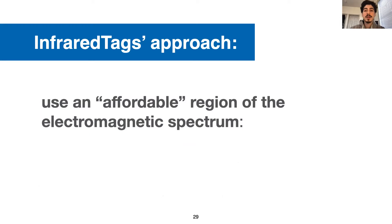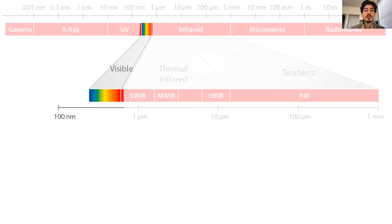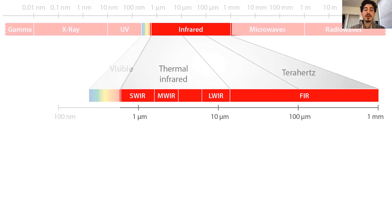Infrared tags achieve this by using an affordable region of the electromagnetic spectrum, the near-infrared region. Now, let me explain what I mean by affordable. Here you see the electromagnetic spectrum, and here is a section of it. On the left side we see the visible region, and on the right we have different regions of infrared light.